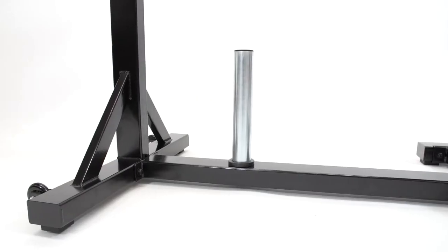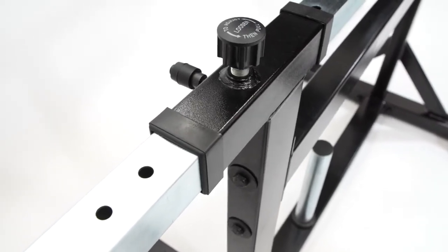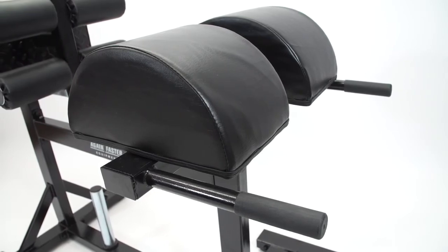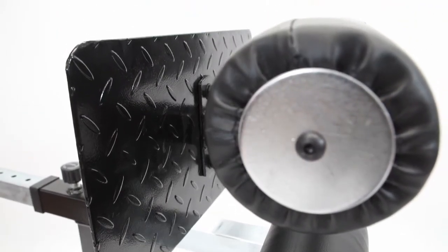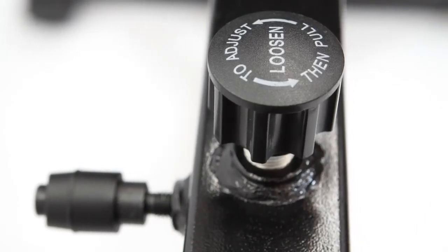The Again Faster GHD was engineered to be stable, durable, and extremely easy to use, with hip and foot pads made of high-density foam that was chosen to hold its shape under a lifetime of frequent use. Heavy-duty rubber wheels are designed to make repositioning easy, and a pop pin and metal tension lever allow for quick and painless foot plate adjustment.